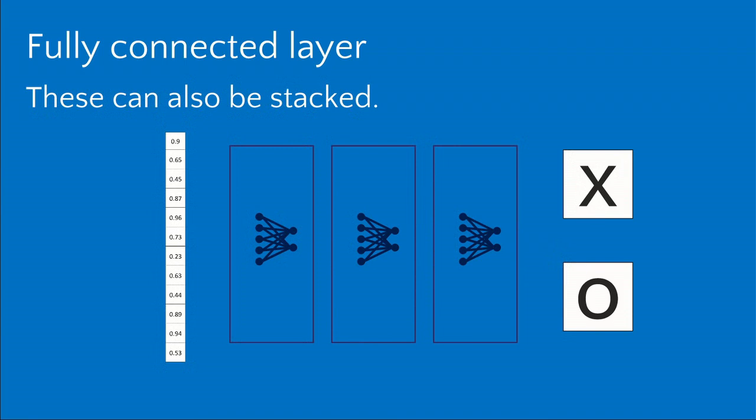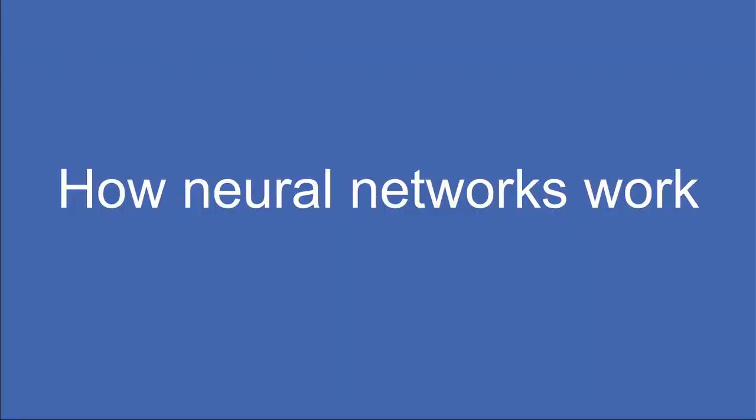These layers can also be stacked. You can have hidden layers — secret intermediate categories — where one layer votes on the first set of hidden categories, those vote on the next layer, and so forth until you get to your final outputs. These all stack onto the end.